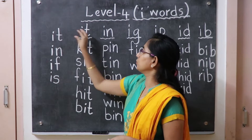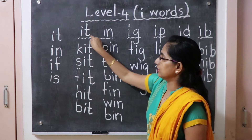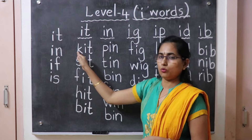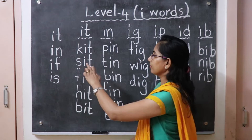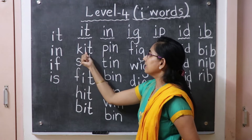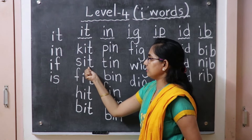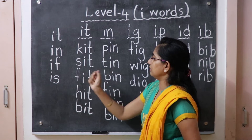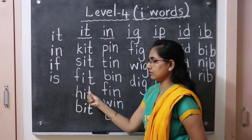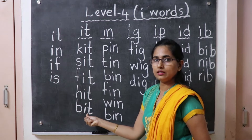Now we can use -it words. It is easy to write. In the beginning we have a consonant, E is in the center — the I sound. This sound is E. K-it: kit. S-it: sit. F-it: fit. H-it: hit. B-it: bit. Same pattern.